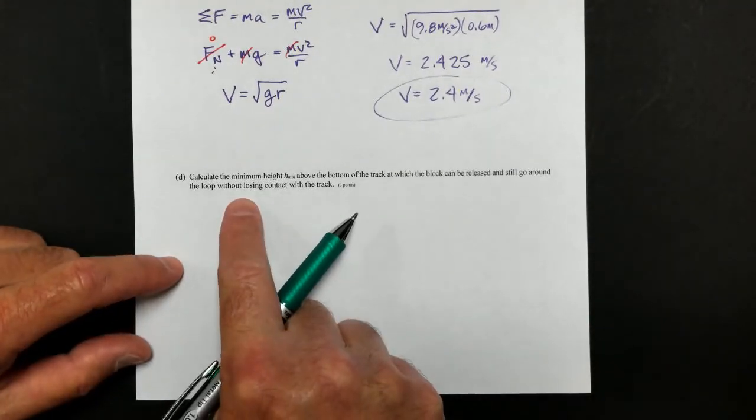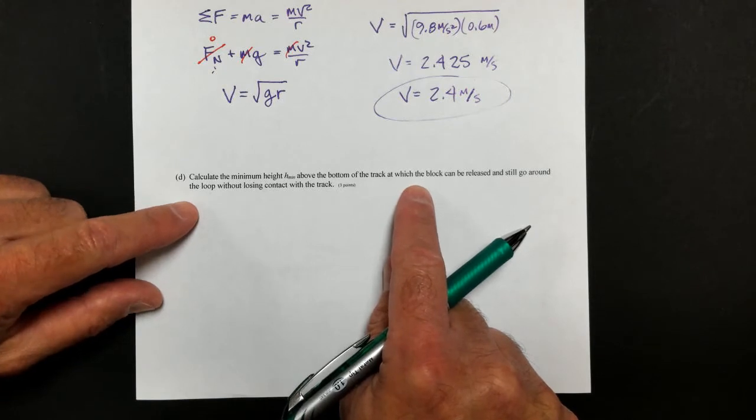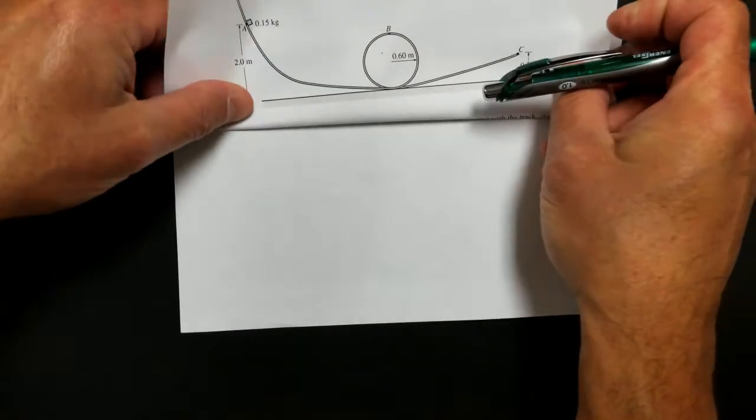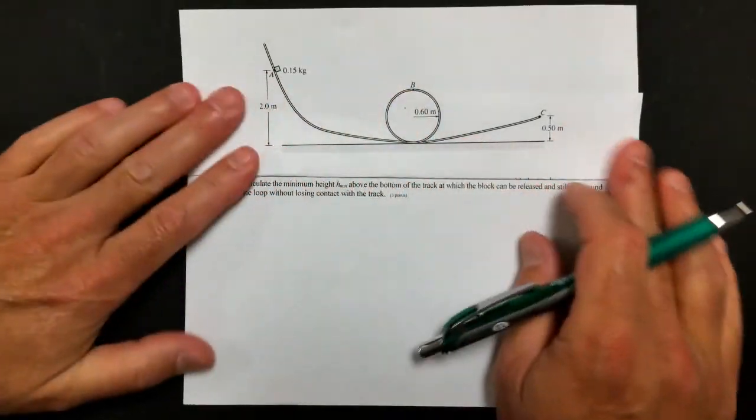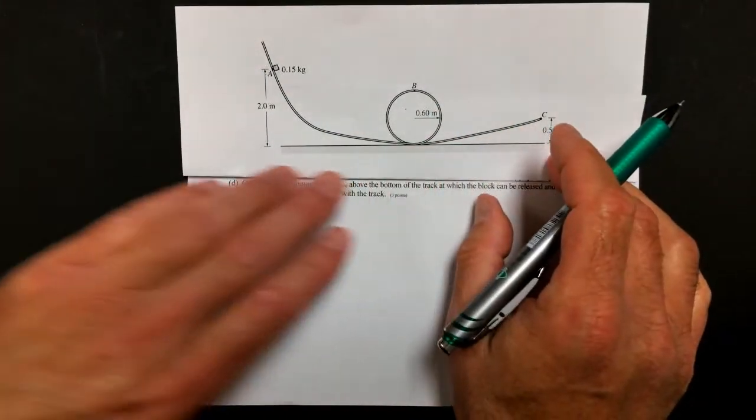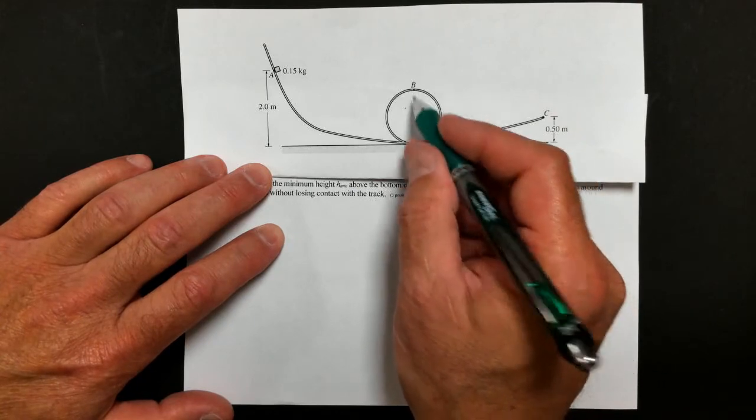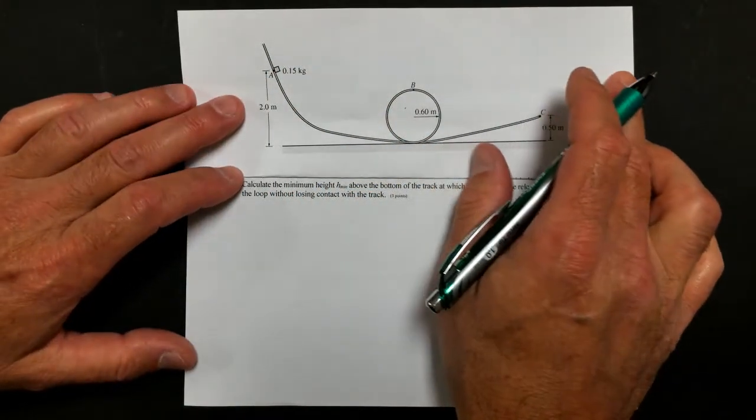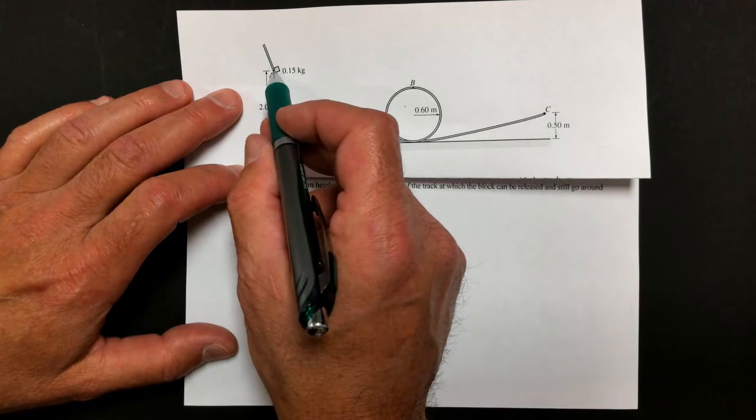Next up, this is an interesting one. This is a really great problem because it's asking us for the minimum height above the bottom of the track at which the block can be released and still go around the loop without losing contact with the track. Let me just fold this up for you guys so we can see this problem still. So what we're looking for is this minimum height. We know at 2 meters above, it's going to go through the track no problem. However, we want to find out what the minimum height is. Wherever this is, it's going to get it through the track without falling off. Now, we could, of course, use our minimum speed to work backwards and figure out what the height should be. But there's probably an easier way to do it.